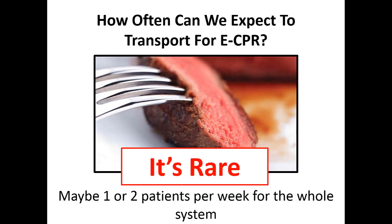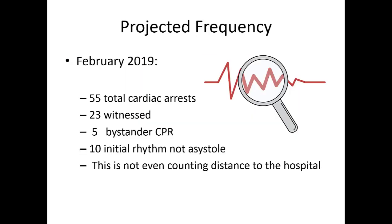A big question that comes up is how often are we going to be doing this, because it's a big change from what we normally do. I don't think it's going to be that frequent — probably one maybe two patients a week in the whole system. For the nine echoes that timeline will really be a limiting factor. The patients we'll most likely see are our 31 deltas or six deltas who code right in front of us, so we'll know it's a witnessed arrest with immediate bystander CPR. Looking at our February numbers: 55 total cardiac arrests, 23 witnessed, but only five got bystander CPR — so we're at only five for the entire month before even accounting for distance from the hospital.